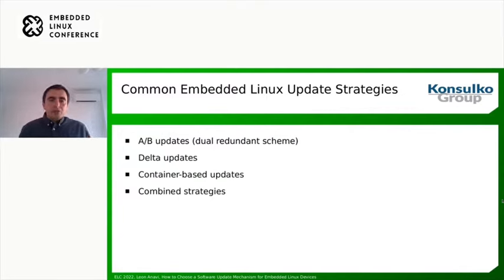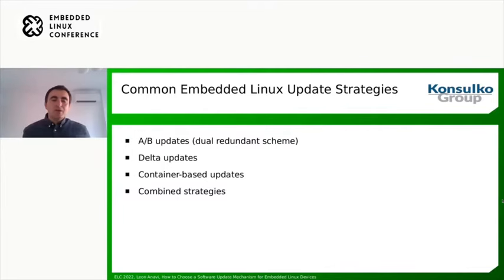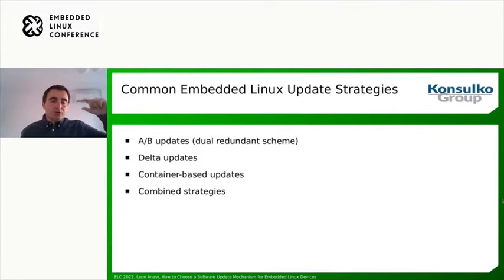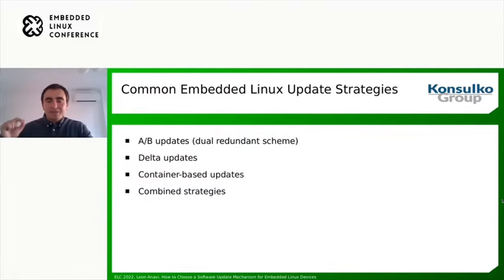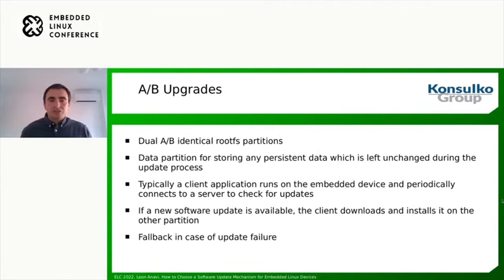Now let's talk about the strategies for updating embedded Linux devices. Basically there are three main strategies. First, A-B updates, where we have a dual redundant scheme — basically two identical partitions. Second, delta updates, where the update artifact is just a small chunk of binary data representing the difference between the old and new image. Third, container-based updates, which bring containers to embedded devices. And sometimes for more sophisticated use cases, you may need to combine several of these strategies together.